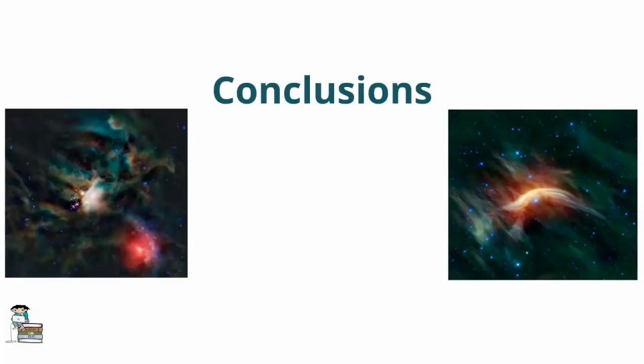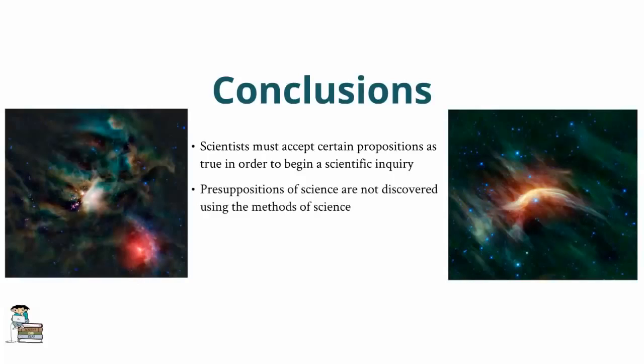So to conclude, while science is an indispensable tool in our pursuit of knowledge concerning the natural world, the claim made by the proponents of scientism seems untenable. Science must accept as true certain principles about the structure of nature prior to undertaking any scientific investigation. And these principles, or the presuppositions of science, are themselves not discovered utilizing the methods of science. Furthermore, by asserting that only science can provide us with knowledge of the world, scientism puts forth a claim that is itself not derived from the operation of science, and therefore puts forth a self-refuting claim.